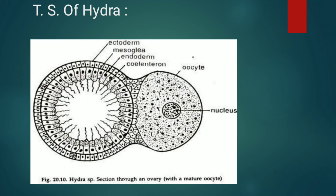The endoderm forms the inner gastrodermis lining the coelenteron, which is mainly concerned with nutrition. The jelly-like non-cellular mesoglea serves as an elastic supporting framework. The tentacles are structurally identical with the body wall. The cellular layers of the body wall are composed of several types of cells for carrying out different functions.